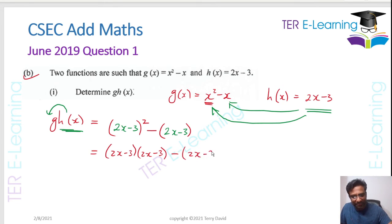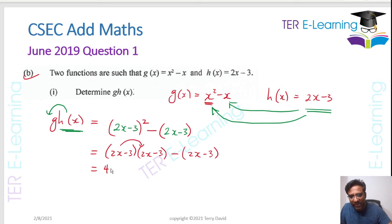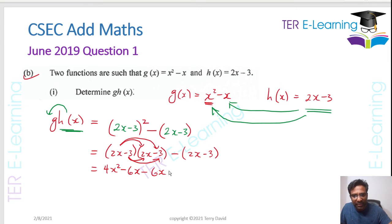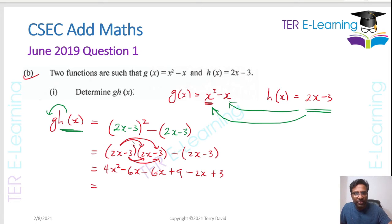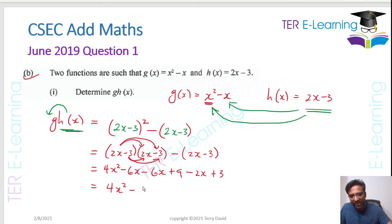Expanding (2x − 3)(2x − 3): 2x times 2x gives 4x²; 2x times −3 gives −6x; −3 times 2x gives another −6x; and −3 times −3 gives +9. Then for the last bracket, we need to be careful — it becomes −2x + 3. So combining, we have 4x² − 12x + 9 − 2x + 3.